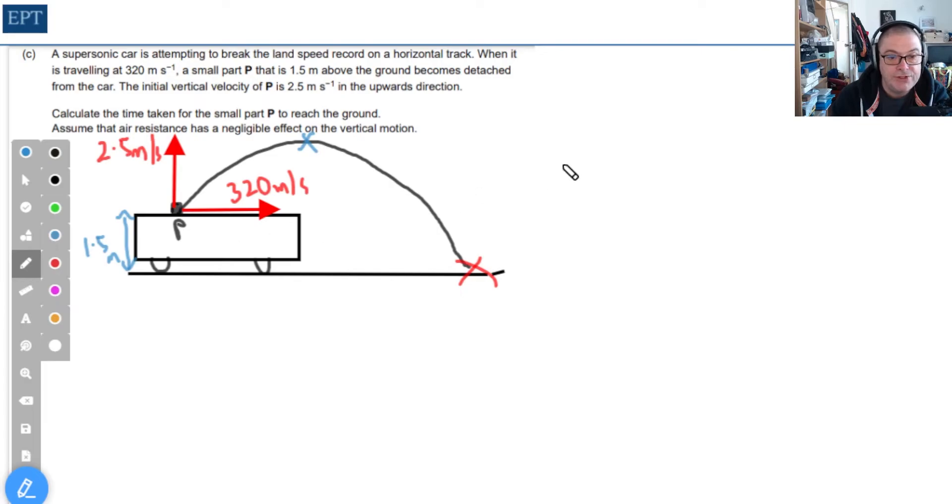Let's look at the time to get to the top. We use v equals u plus at. The velocity at the blue X is zero, and the initial velocity is 2.5, so 0 = 2.5 + (-9.8)t. If you do the algebra, the time to get to the top is 0.255 seconds.